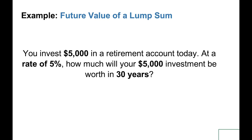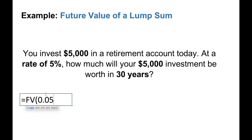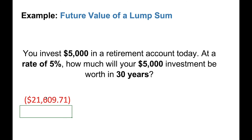Lastly, let's go through an example for the future value of a lump sum. We invest a $5,000 lump sum today, generating a 5% return — how much will it be worth in 30 years? In Excel, we use the FV function. The rate is 5%, the number of periods is 30, there is no payment, and the present value is $5,000. The type does not matter, so we leave it blank. The future value comes out to $21,609. In other words, if you take $5,000 today and invest it, in 30 years it'll be worth $21,609.